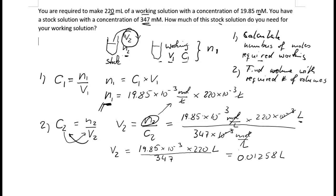We need to be careful with significant figures, and we can convert that into milliliters by multiplying by a factor of a thousand, which is more common since the question gives milliliters. Written in semi-scientific format, this gives roughly 1.26 times 10 to the power of 1 milliliters. That is how we approach a question like this — I hope it makes sense, and thank you very much for watching.